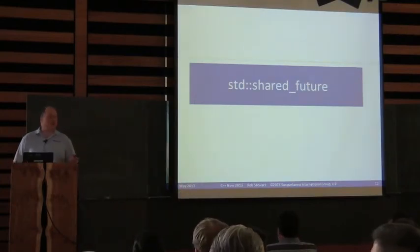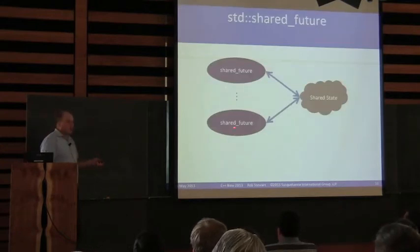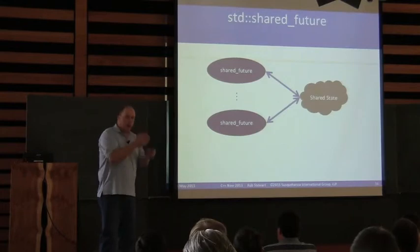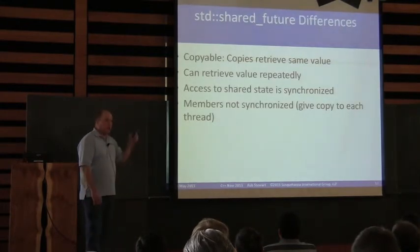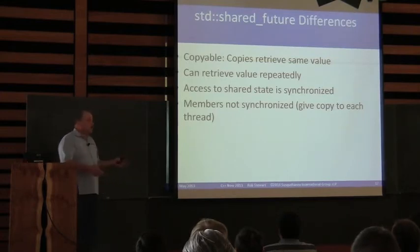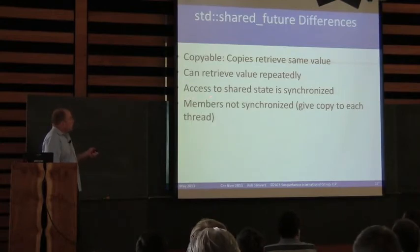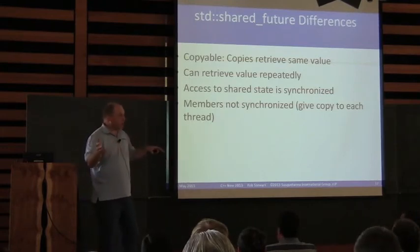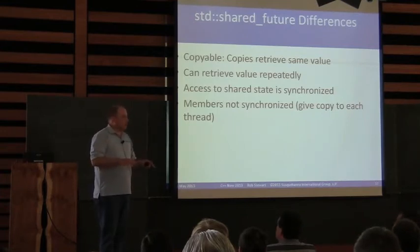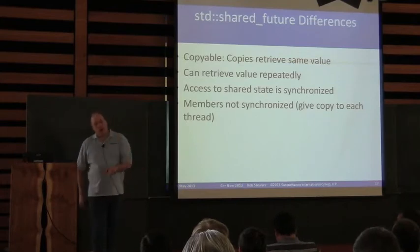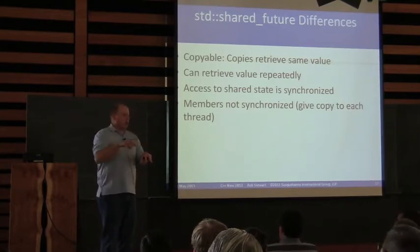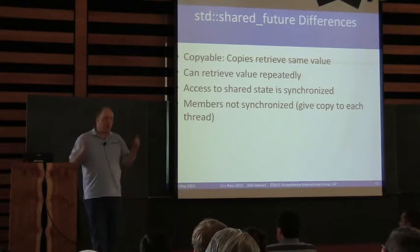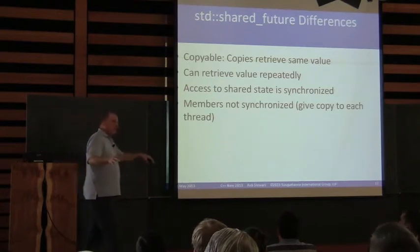Moving on to std::shared_future. This one is a little different from std::future in that you can have multiple shared futures referencing the same shared state. Instead of a one-to-one relationship where you get the value and it's done, with shared_future they're copyable — each one can access the same value and you can see it more than once. Access to shared state is synchronized — when you've got multiple shared futures each in a separate thread all asking for the value, that access is synchronized. However, if you have the same shared_future instance and call it from multiple threads, that's a problem. Give each thread its own copy and you're good to go.